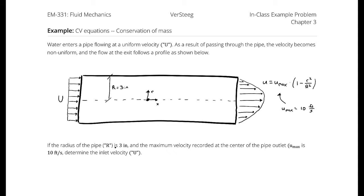So u is a function of little r — a constant times (1 - r²/R²). If the radius of the pipe, big R, is 3 inches and the maximum velocity recorded at the center of the pipe outlet, u_max, is 10 feet per second, determine the inlet velocity, that's uppercase U.